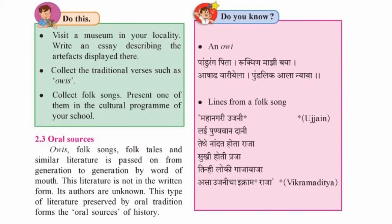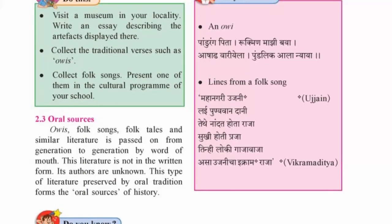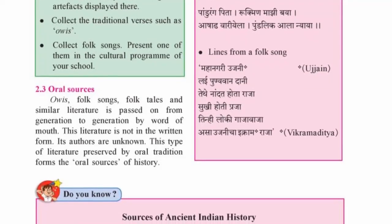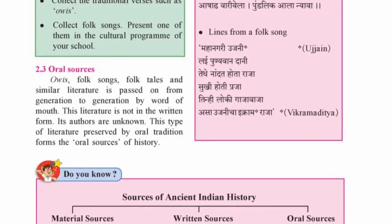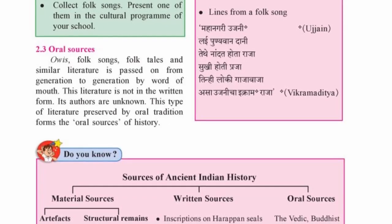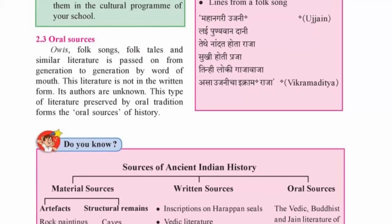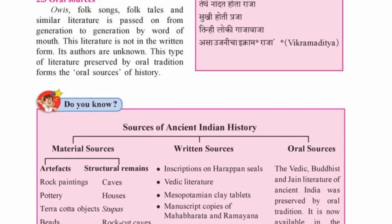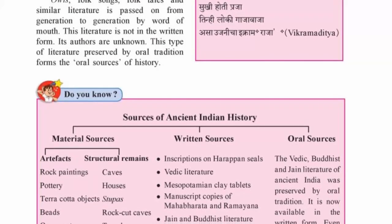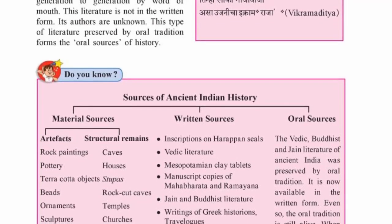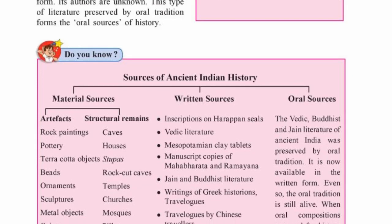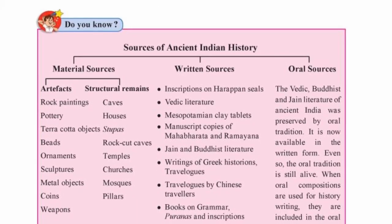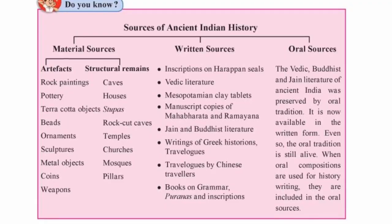Oral sources. Stories, folk songs, folk tales and similar literature are passed on from generation to generation by word of mouth. The author of this unwritten literature is unknown. This type of literature, preserved by oral tradition, forms the oral sources of history.